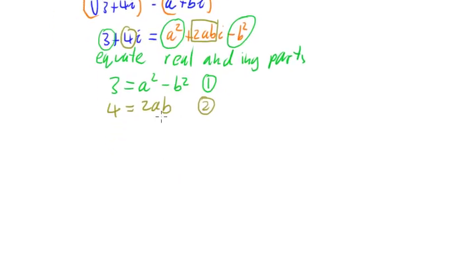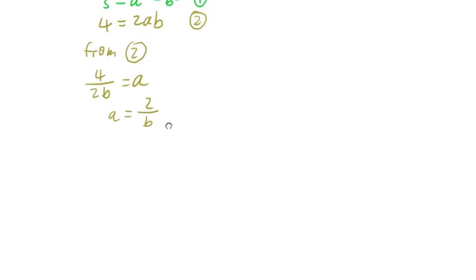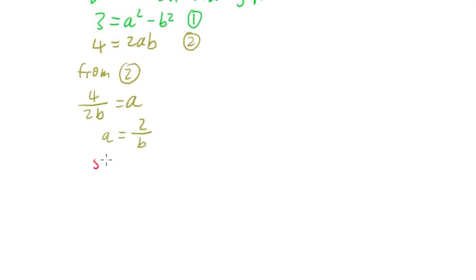Working on that, we can look at equation 2 and get a value of a to substitute back into equation 1. From equation 2 we can rearrange: 4 divided by 2b gives us a, so dividing by 2 and dividing by b means that a equals 2 over b. Now that we've got a value for a, we can substitute a equals 2 over b into equation 1.